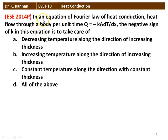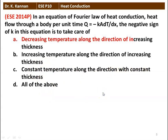The second question: In the Fourier law of heat conduction, the heat flow through a body per unit time Q is given by minus K·A·(dT/dx). The negative sign in this equation is to take care of: (1) decreasing temperature along the direction of increasing thickness, (2) increasing temperature along the direction of increasing thickness, (3) constant temperature, (4) all the above. The correct answer is: decreasing temperature along the direction of increasing thickness. When you go in the positive x direction, the temperature decreases because of heat transfer, so the negative sign accounts for that.